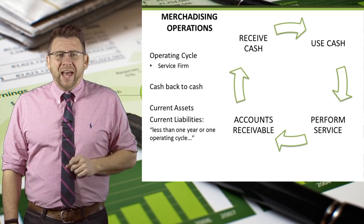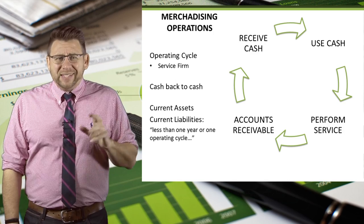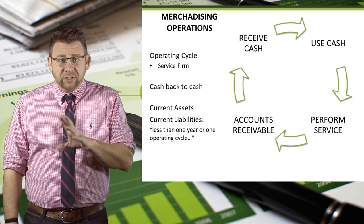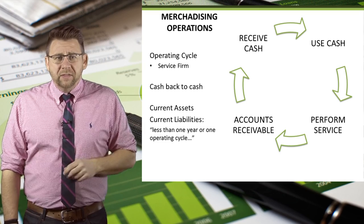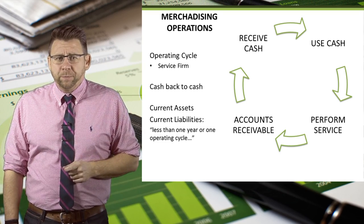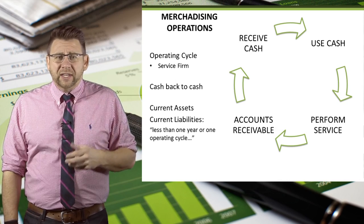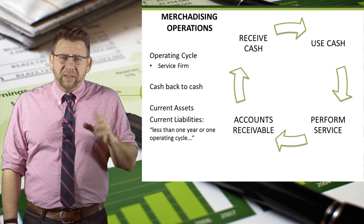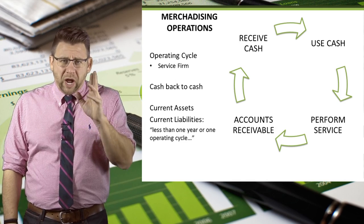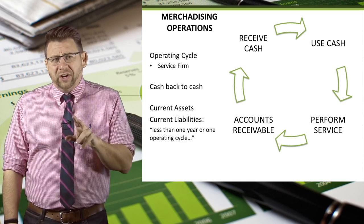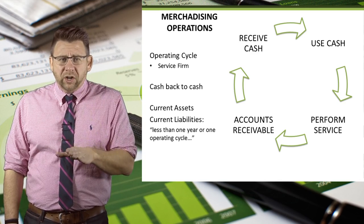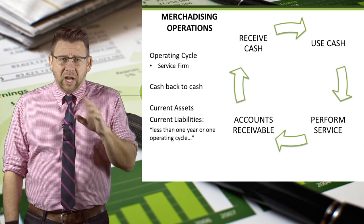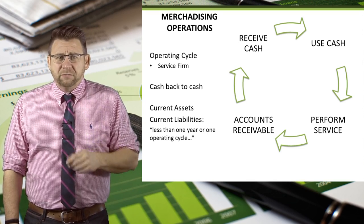Another new concept is that of the operating cycle — basically, how fast cash can be used to perform a service or sell a good and then be turned back into cash. This slide shows the operating cycle of a service firm. These firms use cash primarily in salaries and supplies to perform their services, and then when they collect the accounts receivable, they've completed the operating cycle. The cutoff for current assets and current liabilities is one year or one operating cycle, whichever is longer. Most service firms will have many operating cycles within one year, so the one-year cutoff is most appropriate.